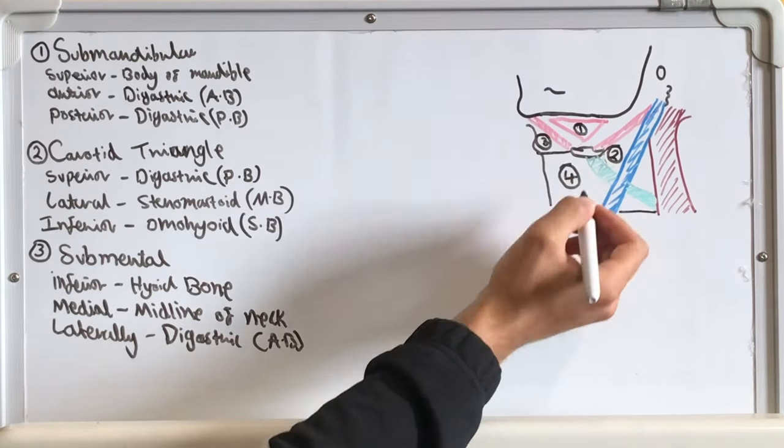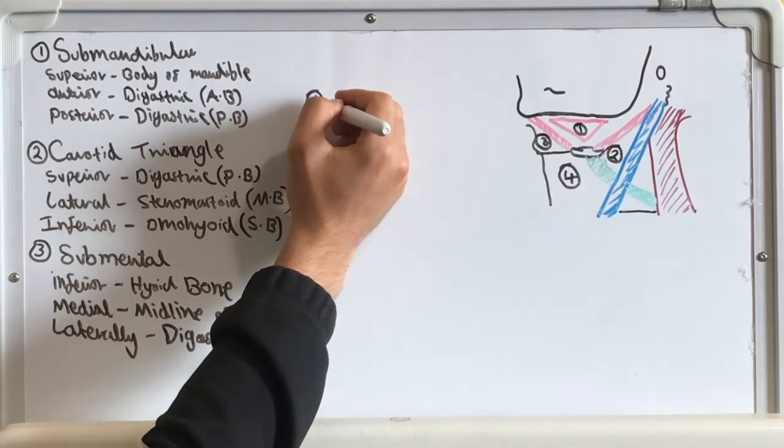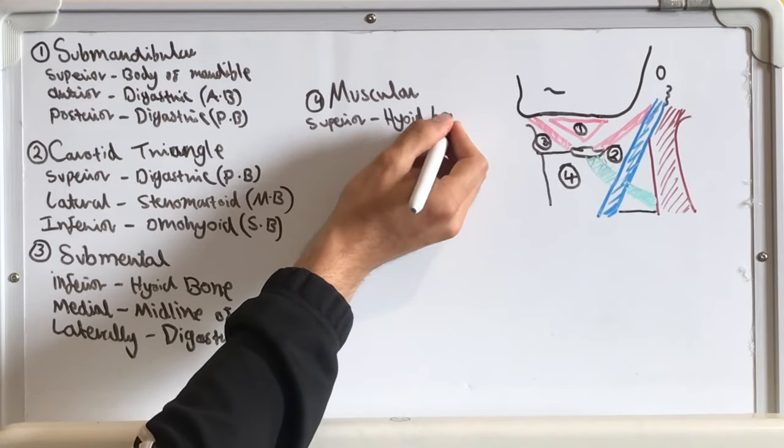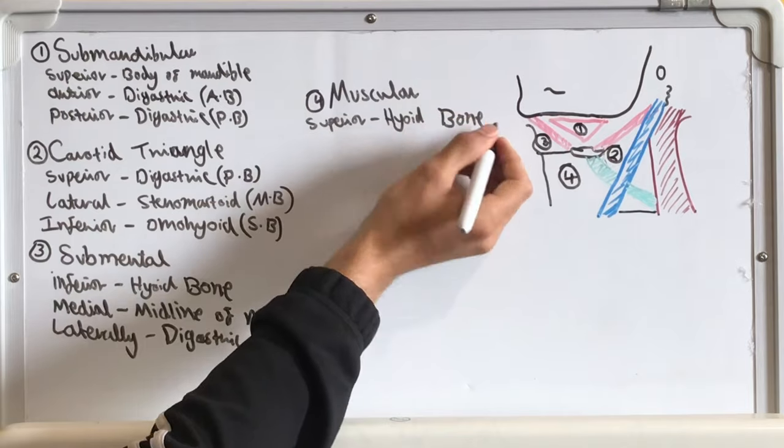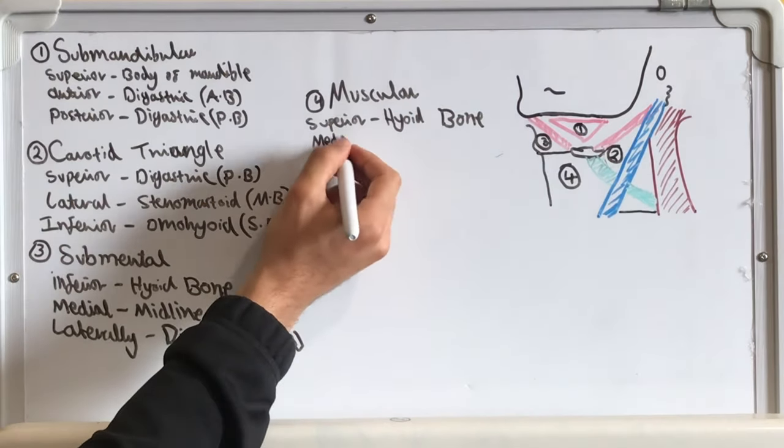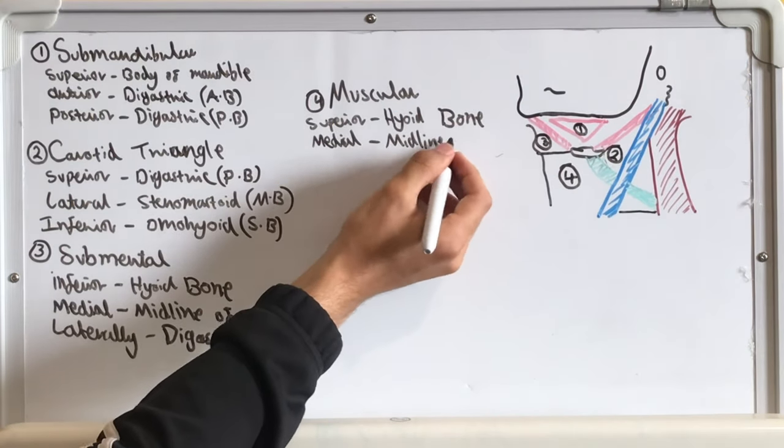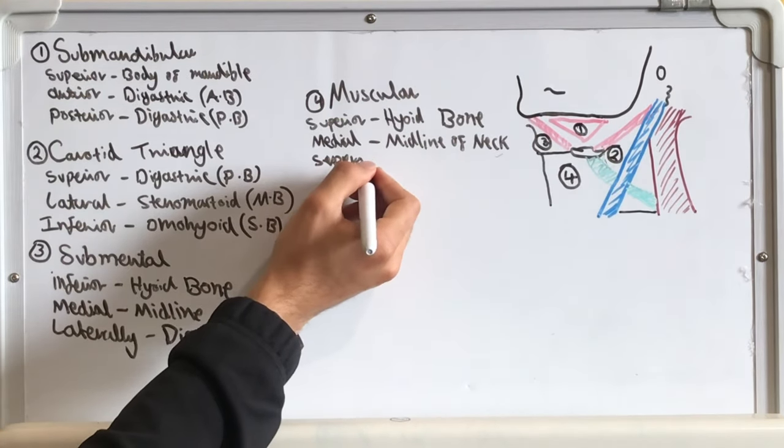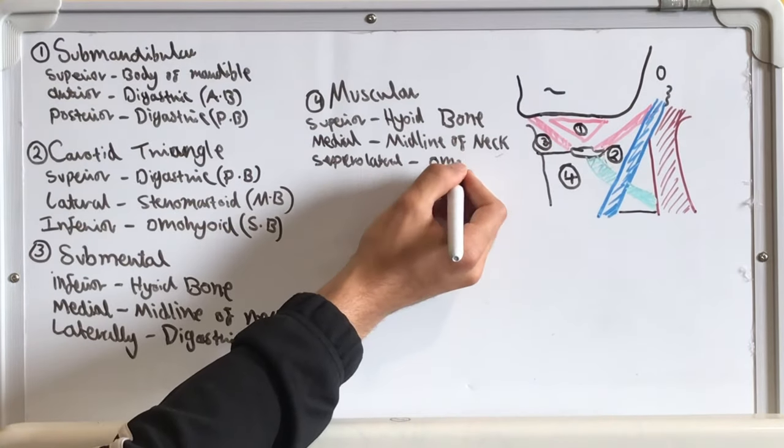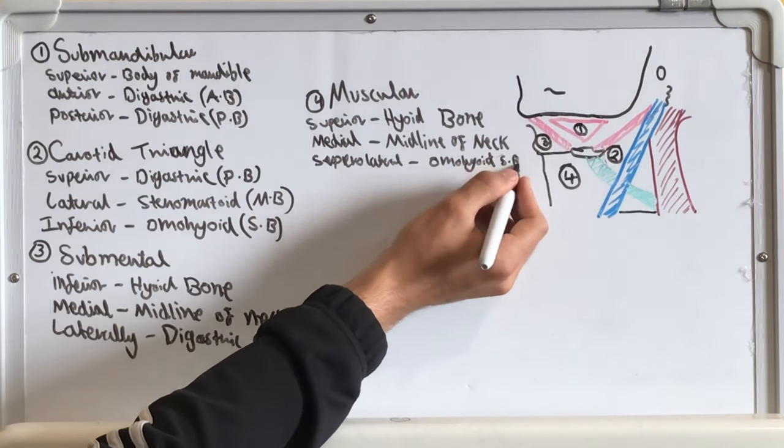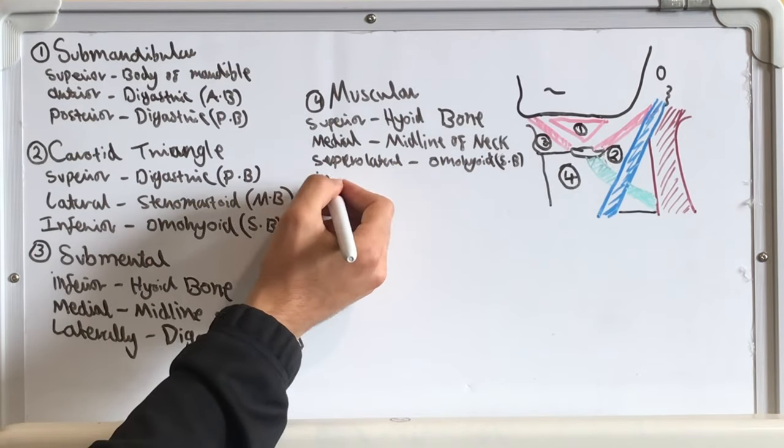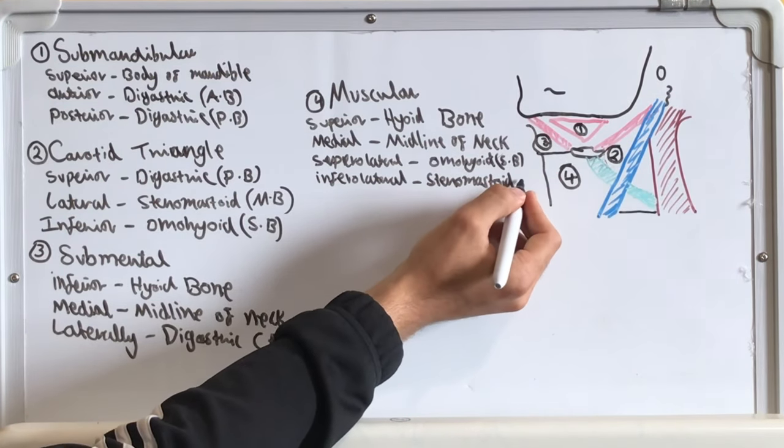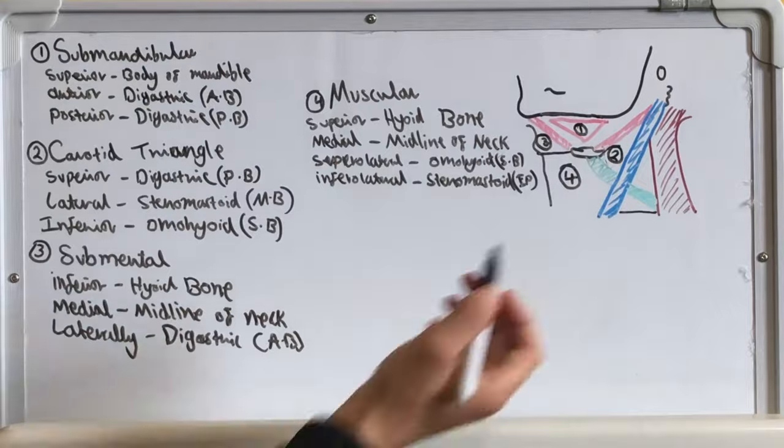And the fourth triangle is the muscular triangle of the neck which is a dubious triangle in reality having four boundaries: the superior boundary is the hyoid bone, the medial boundary is the midline of the neck, and the supralateral boundary is the omohyoid superior belly and the infralateral boundary is the sternomastoid muscle, its inferior portion.